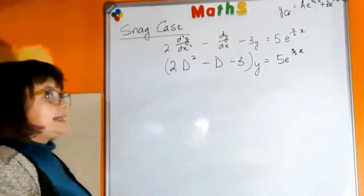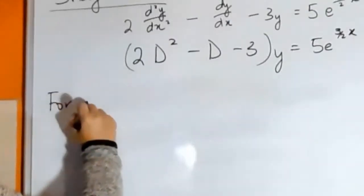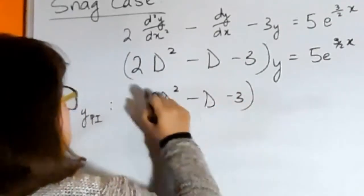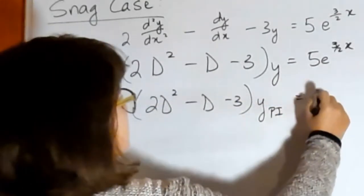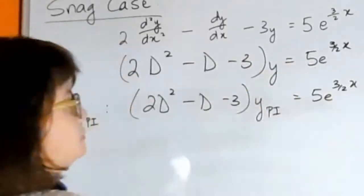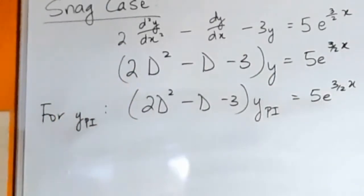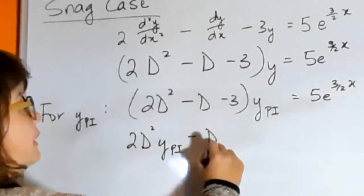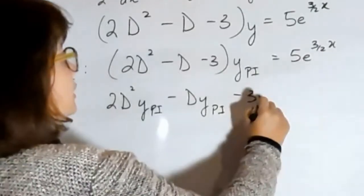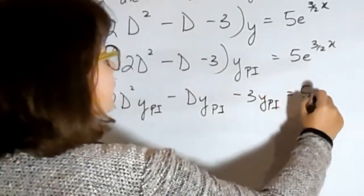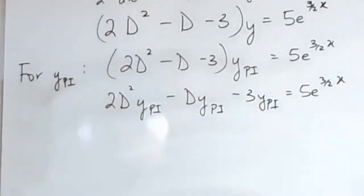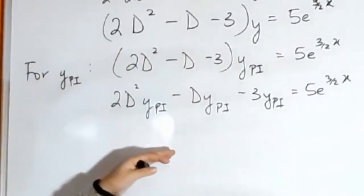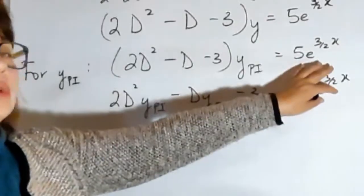So let's have a look at how to find our particular integral. And to find our particular integral, what we are looking for is we are looking for some function so that if we find the first derivative and the second derivative and substitute into the equation, the equation has to balance, which means our left-hand side has to equal to 5e to the 3 over 2x.